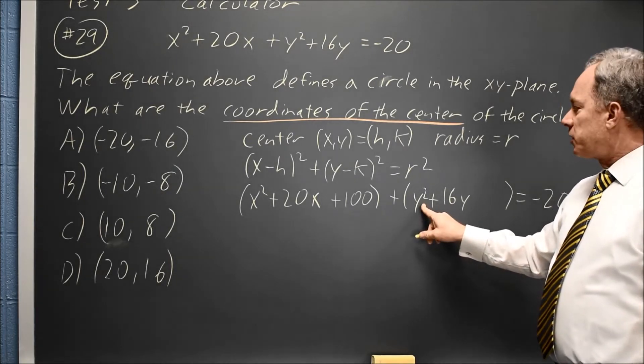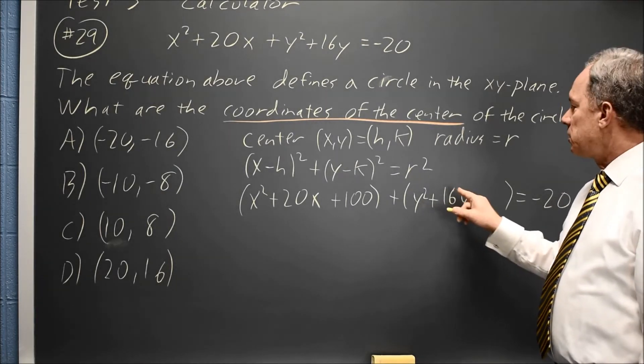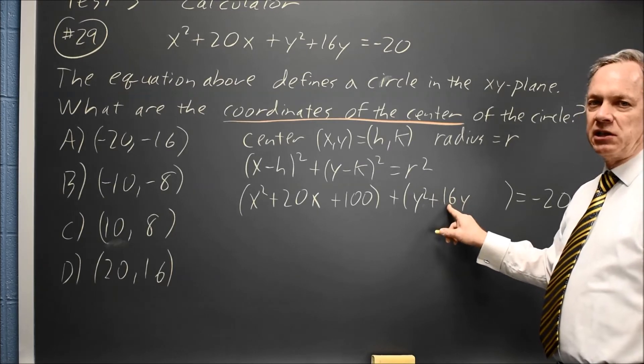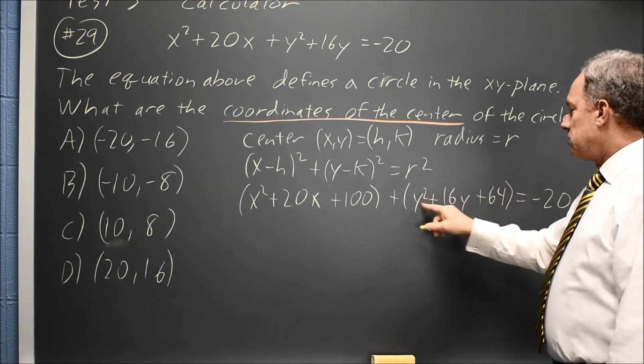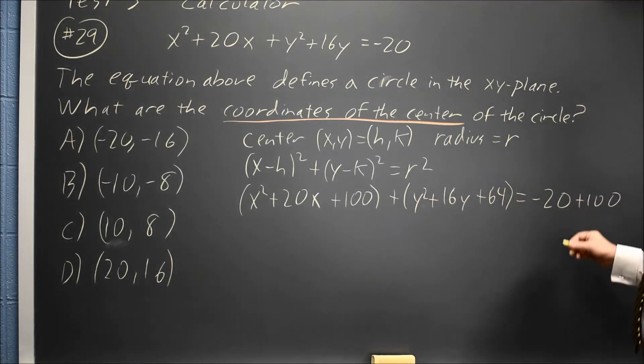For the y's, the y² leading coefficient is 1, the y has a coefficient of 16, half of 16 is 8, and 8² is 64. So if I add 64, this quantity will be a perfect square. I added 64 on the left, I'll add 64 on the right.